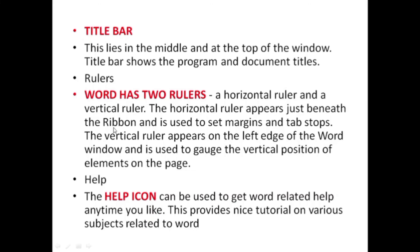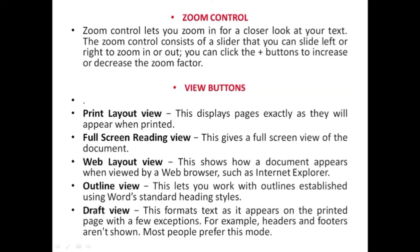MS Word has two rulers — a horizontal ruler and a vertical ruler. The horizontal ruler appears just beneath the ribbon and is used to set margins and tab stops. The vertical ruler appears on the left edge of the Word window and is used to track the vertical position of elements on the page. The help icon can be used to get Word-related help anytime. The zoom control lets you zoom in for a closer look at your text — it consists of a slider you can move left or right, and a plus button to increase or decrease the zoom factor.